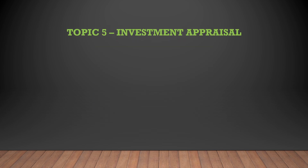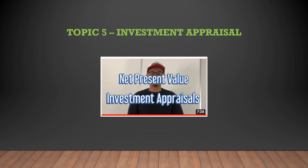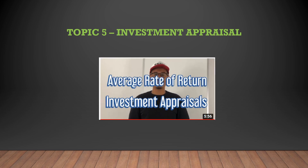Topic 5: Investment appraisals. Click the card up there for details on payback. Click the card up there for details on NPV — net present value — and remember those discount factors. The final topic is ARR — average rate of return. Click the card up there for more details.